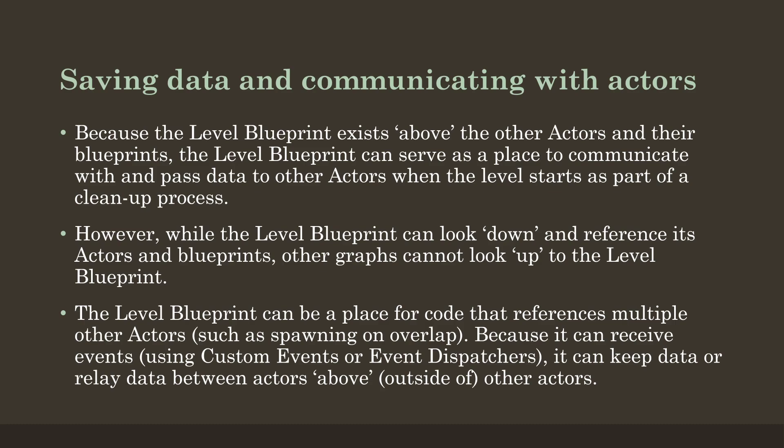The actors can't communicate upward to the level, which of course makes perfect sense. So the level blueprint is a great place for code that references multiple other actors — things like spawning on overlap. Because it can also receive events using custom events or event dispatchers, it can keep track of data or relay data between actors. If we wanted to communicate at a network level, we could do that as part of the level blueprint instead of at individual actors. This just gives us greater possibilities for how we want to reference and use things, while of course we can always use blueprints within particular actors.